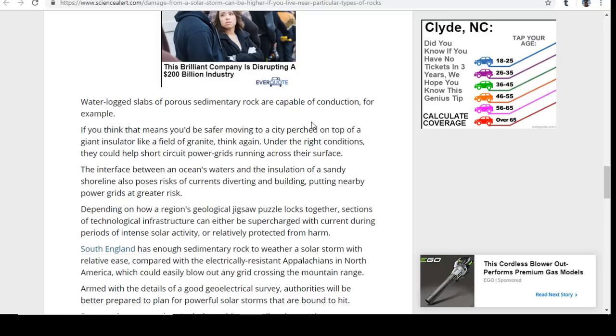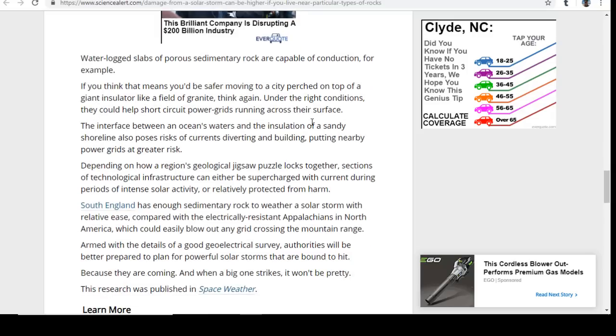Depending on how a region's geological jigsaw puzzle locks together, sections of technological infrastructure can either be supercharged with current during periods of intense solar activity or relatively protected from harm. South England has enough sedimentary rock to weather a solar storm with relative ease compared with the electrically resistant Appalachians in North America, which could easily blow out any grid crossing the mountain range. Armed with details of a good geoelectrical survey, authorities could be better prepared to plan for the powerful solar storms that are bound to hit.